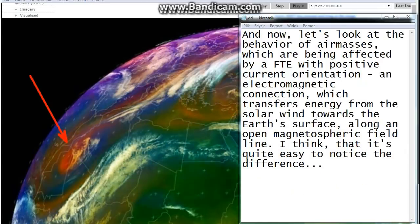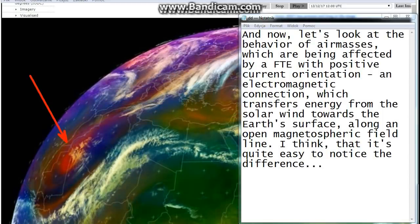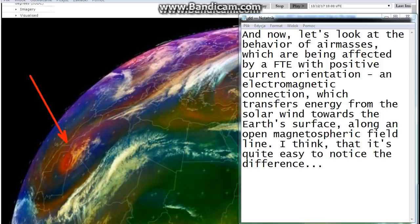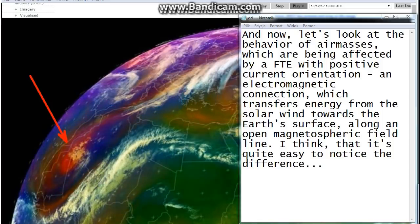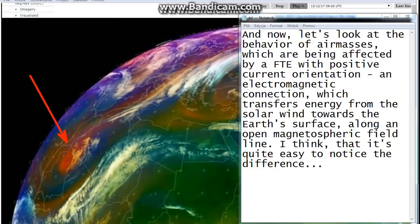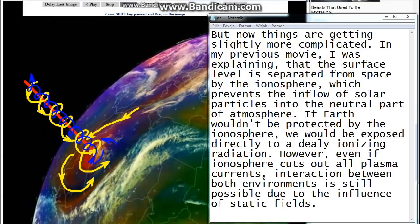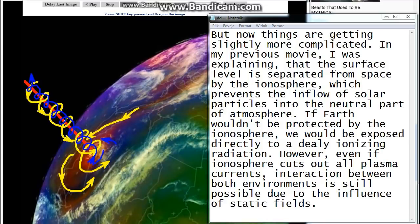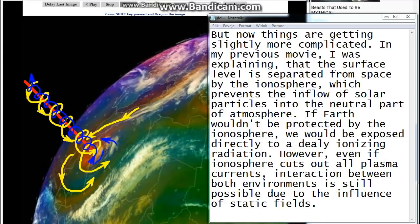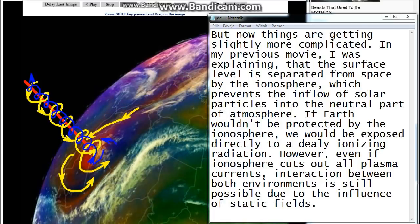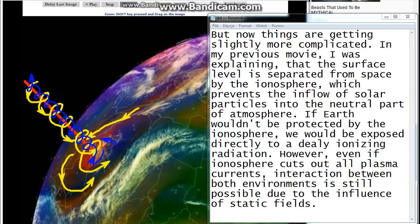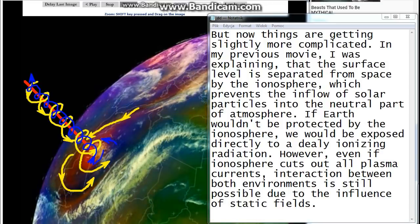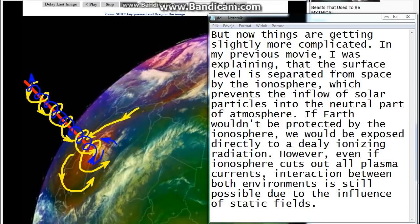And now, let's look at the behavior of air masses, which are being affected by a FTE with positive current orientation. An electromagnetic connection, which transfers energy from the solar wind towards the Earth's surface, along an open magnetospheric field line. I think that it's quite easy to notice the difference. But now, things are getting slightly more complicated. In my previous movie, I was explaining that the surface level is separated from space by the ionosphere, which prevents the inflow of solar particles into the neutral part of atmosphere. If Earth wouldn't be protected by the ionosphere, we would be exposed directly to a deadly ionizing radiation. However, even if ionosphere cuts out all plasma currents, interaction between both environments is still possible due to the influence of static fields.